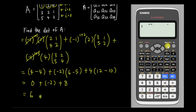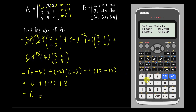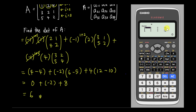Go into the menu and choose number 4, which should show the matrix option. Define the matrix — I choose matrix A, number 1. It asks for your row and column: since this is a 3×3 matrix, I type 3 for both. Then I insert the elements: 1, 2, 4, 3, 2, 1, 5, 4, and 2.